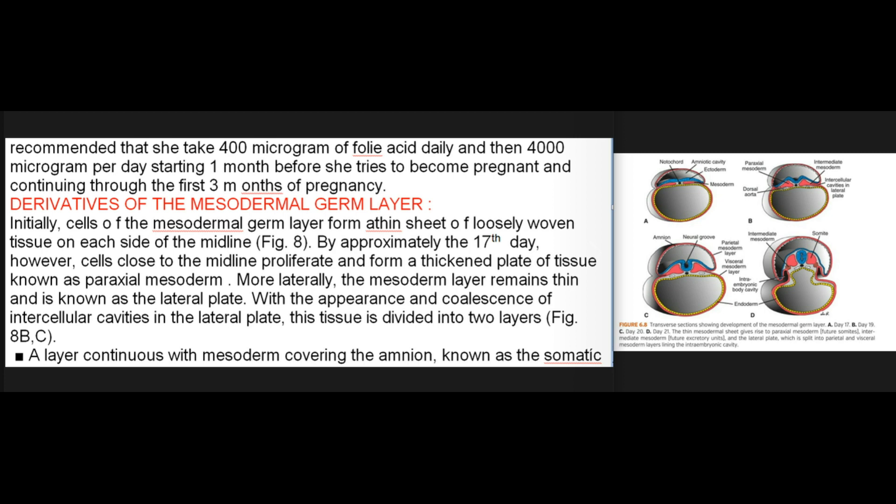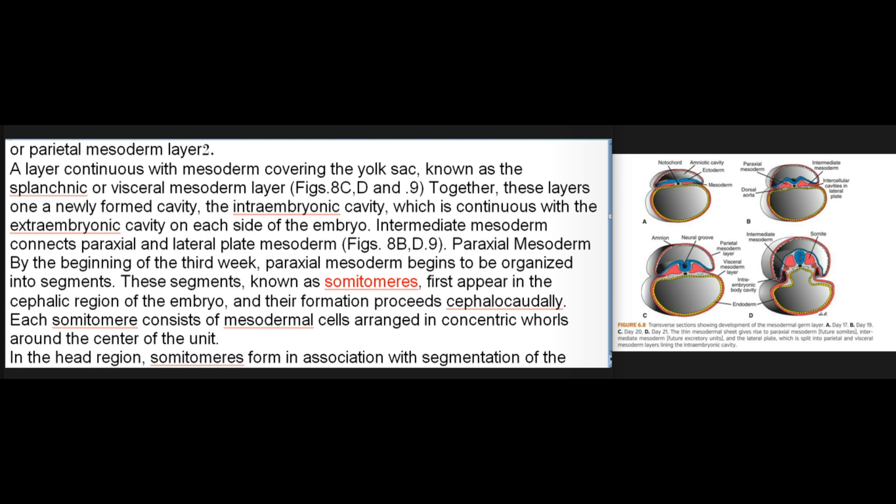Derivatives of the mesodermal germ layer: Initially, cells of the mesodermal germ layer form a sheet of loosely woven tissue on each side of the midline. By approximately the 17th day, cells close to the midline proliferate and form a thickened plate of tissue known as paraxial mesoderm. More laterally, the mesoderm layer remains thin and is known as the lateral plate. With the appearance and coalescence of intercellular cavities in the lateral plate, this tissue is divided into two layers: (1) a layer continuous with mesoderm covering the amnion, known as the somatic or parietal mesoderm layer, and (2) a layer continuous with mesoderm covering the yolk sac, known as the splanchnic or visceral mesoderm layer. Together, these layers line a newly formed cavity, the intraembryonic cavity, which is continuous with the extraembryonic cavity on each side of the embryo. Intermediate mesoderm connects paraxial and lateral plate mesoderm.